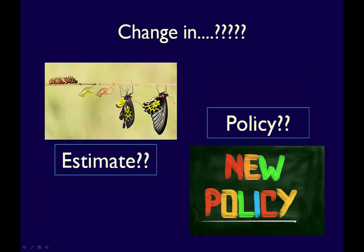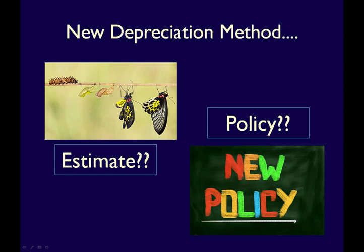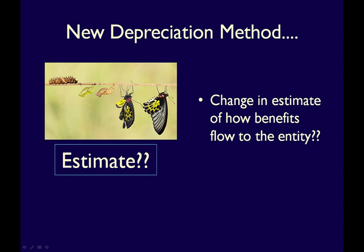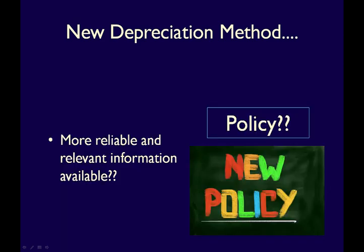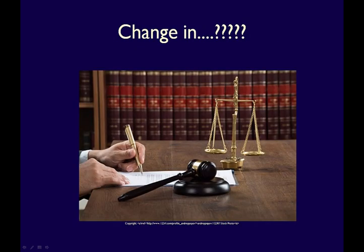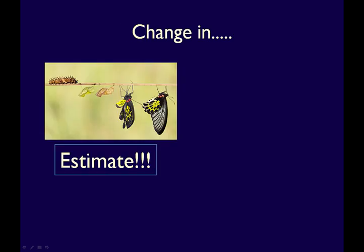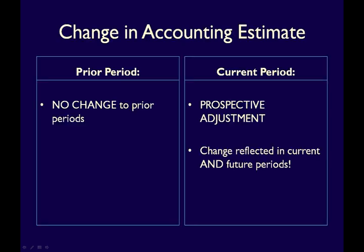Sometimes it is very difficult to differentiate between a change in accounting estimate and a change in accounting policy. For instance, if a business changes its depreciation method — say from straight-line to declining balance — is that a change in estimate or a change in accounting policy? It may be a change in estimate because prior estimates of how the benefits flow to the business have changed, or it may be a change in accounting policy reflecting more reliable and relevant information. This requires professional judgment. Under IFRS, if it is unclear whether a change is one of policy or estimate, the change should be treated as a change in accounting estimate. Remember, a change in estimate requires prospective adjustment with no changes to prior years' financial statements, and there are no disclosure requirements.